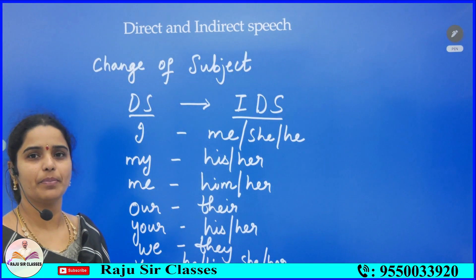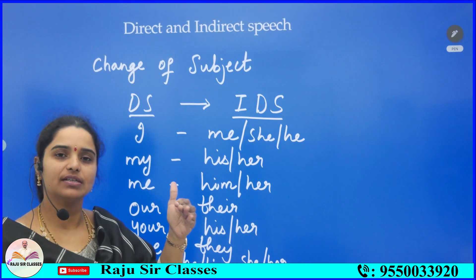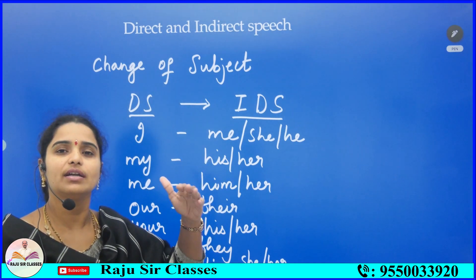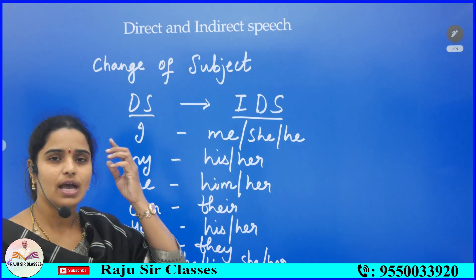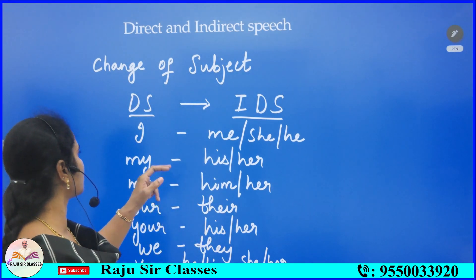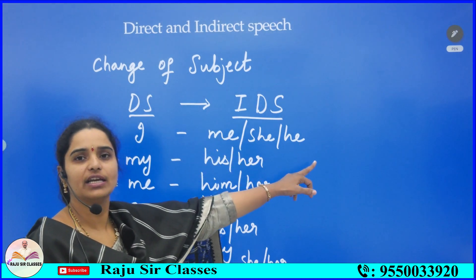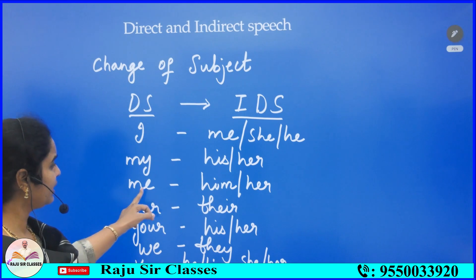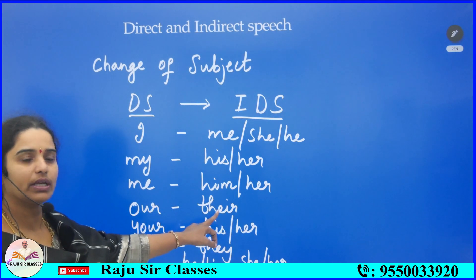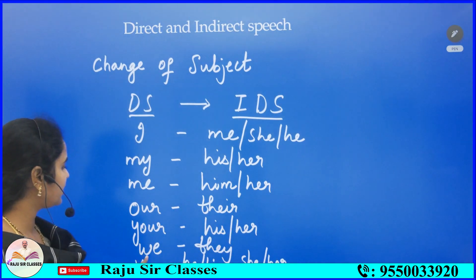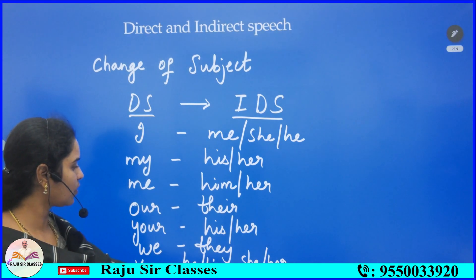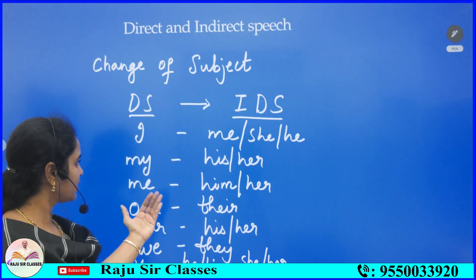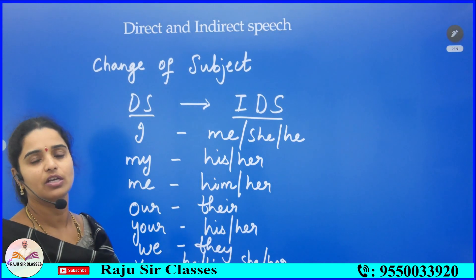Change of subject is very important when converting from direct to indirect speech. The pronoun 'I' changes into 'he', 'she', or 'me' depending on the subject. 'My' changes into 'his' or 'her'. 'Me' changes into 'him' or 'her'. 'Our' changes into 'their'. 'You' changes into 'his' or 'her'. 'We' changes into 'they'. 'You' (object) changes into 'he', 'him', 'she', or 'her'.